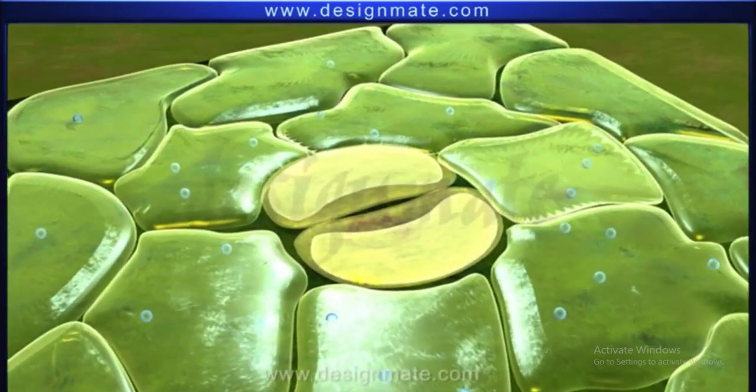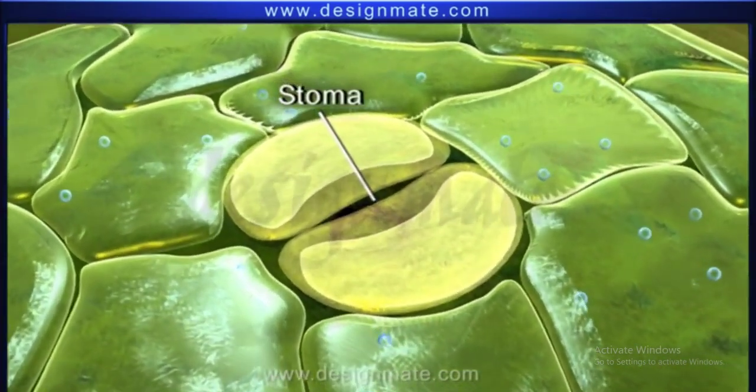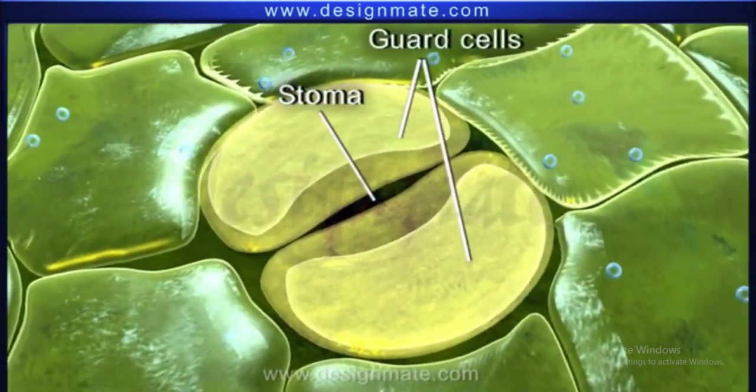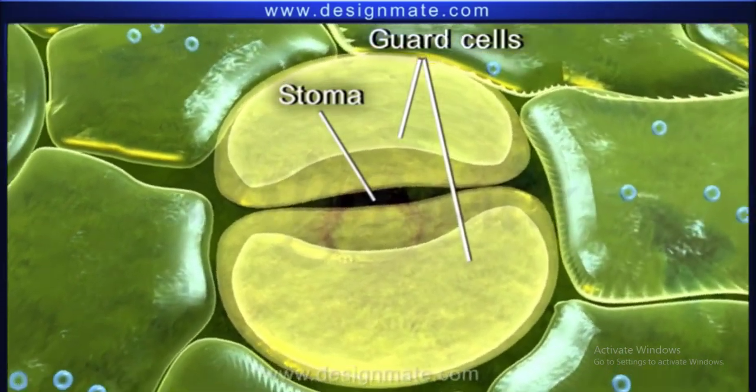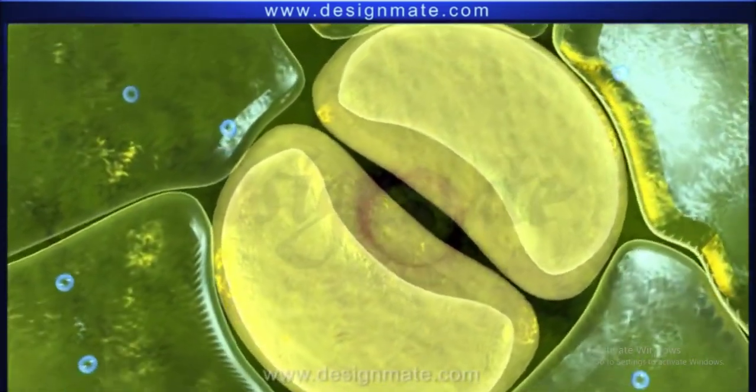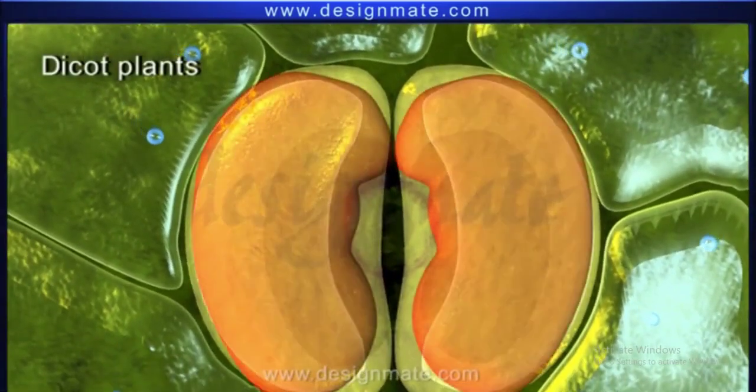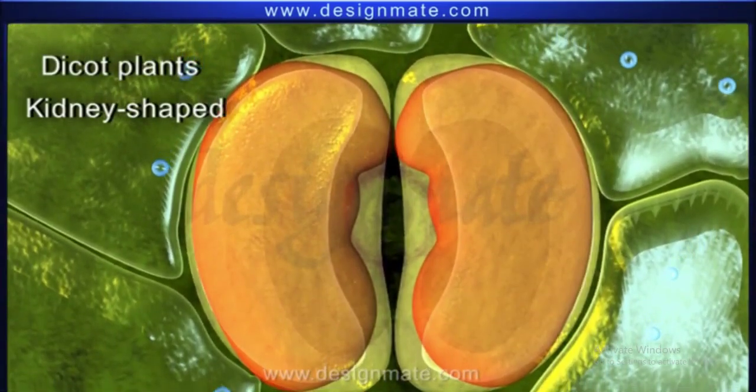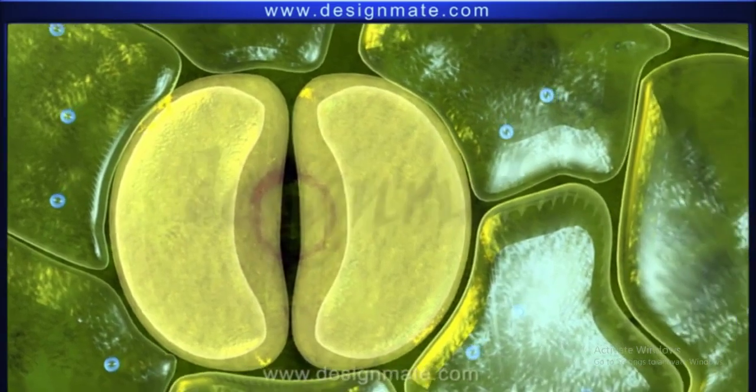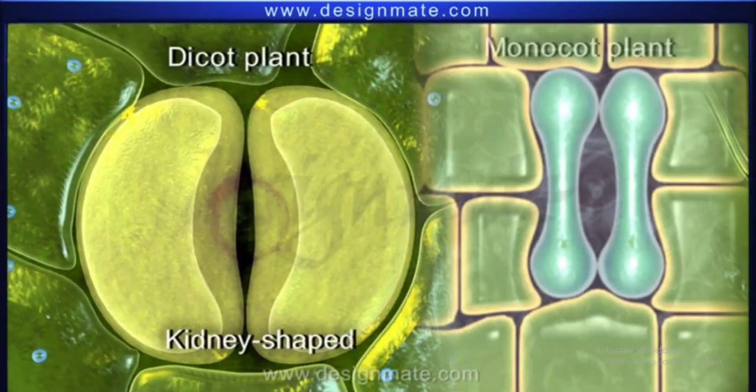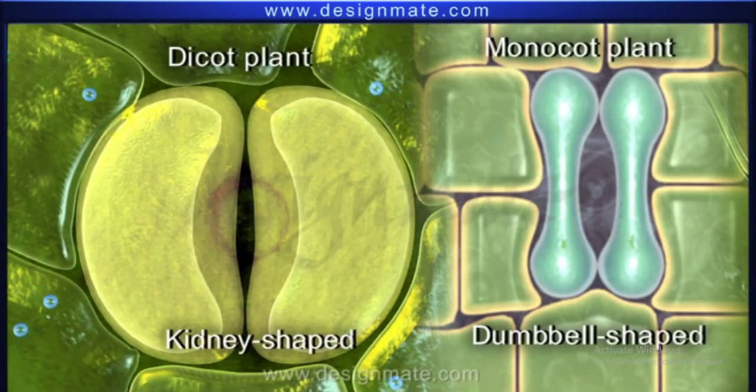Each stoma is a small aperture surrounded by two guard cells. The guard cells in dicot plants are kidney-shaped, whereas in monocot plants, guard cells are dumbbell-shaped.